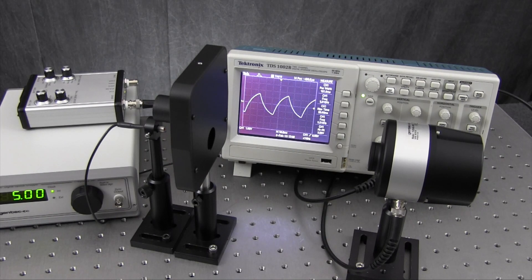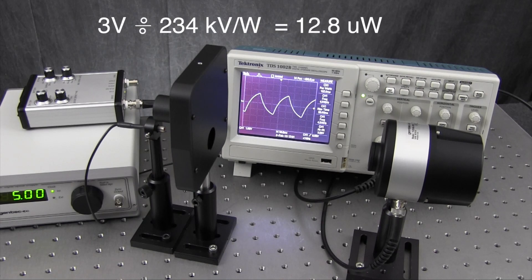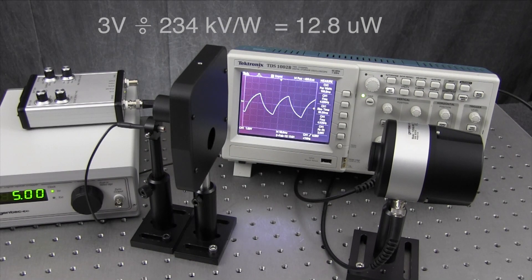It measures about 3 volts on the scope. If we divide 3 volts by the probe's peak-to-peak responsivity of 234 kilovolts per watt, we arrive at a measurement of 12.8 microwatts.